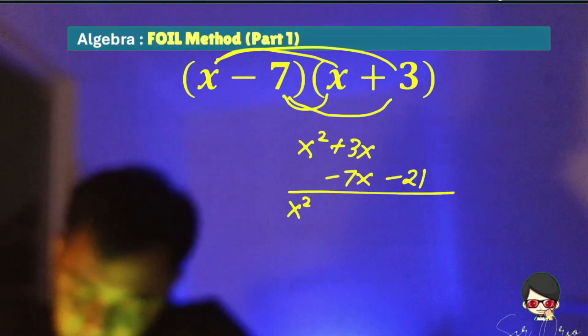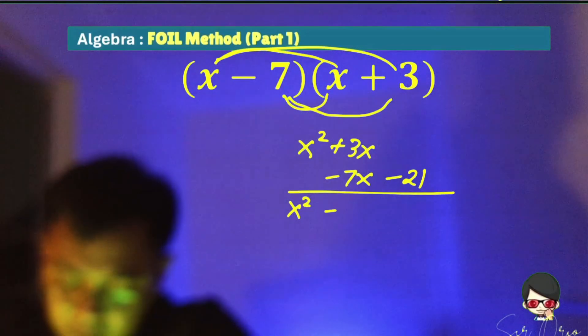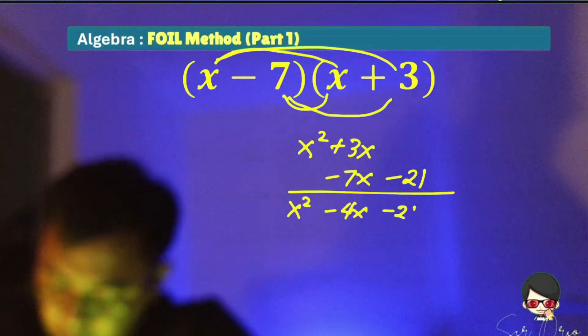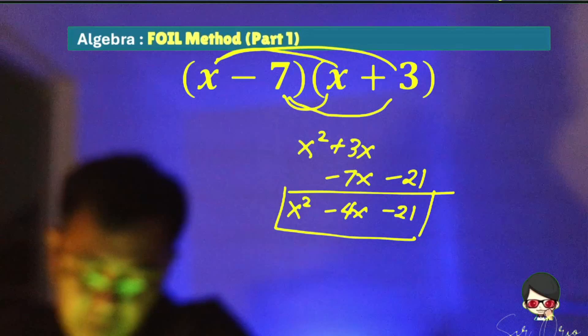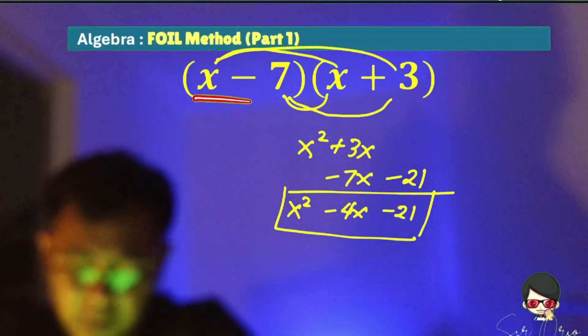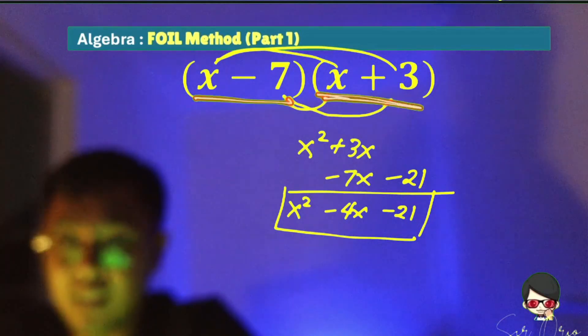So we have x squared minus 4x minus 21, which is the product of the quantity x minus 7 times x plus 3.